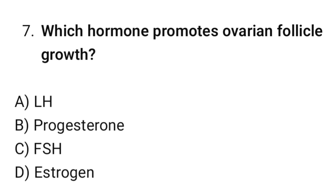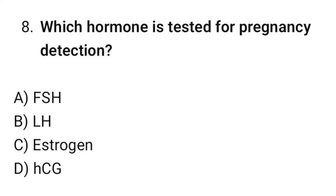Question No. 7: Which hormone promotes ovarian follicle growth? The correct option is C. FSH. Question No. 8: Which hormone is tested for pregnancy detection? The correct option is D. HCG.